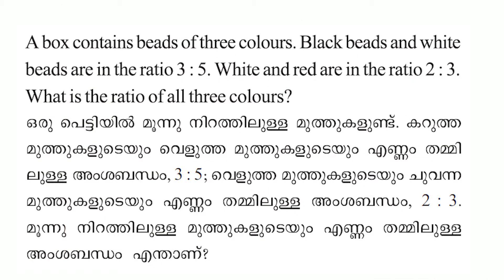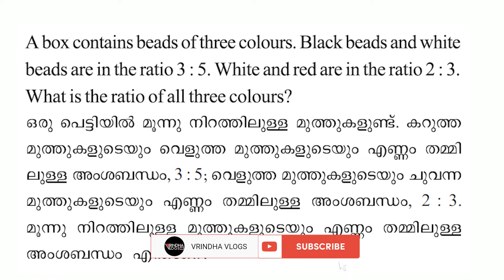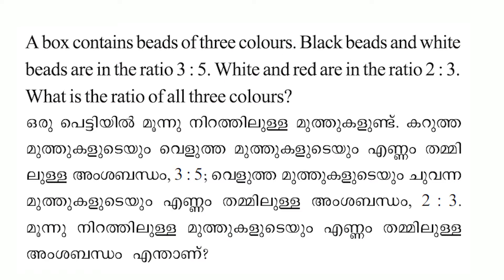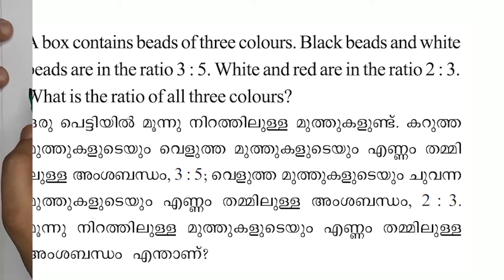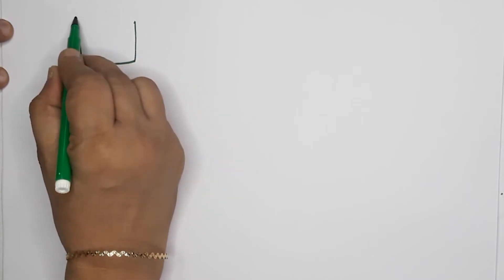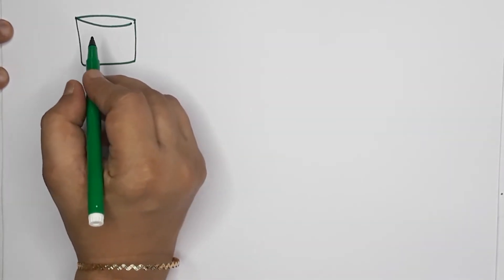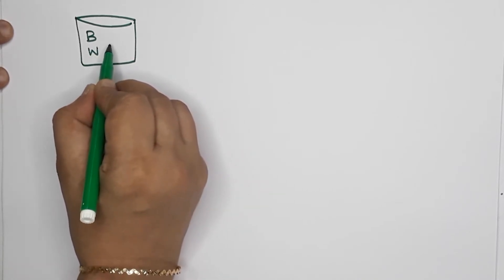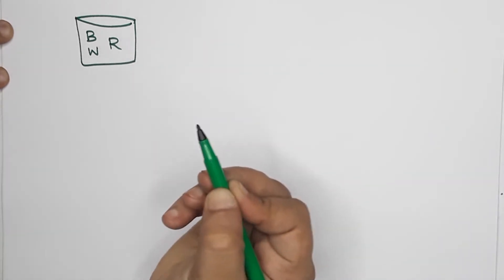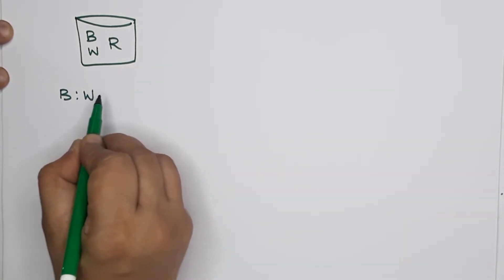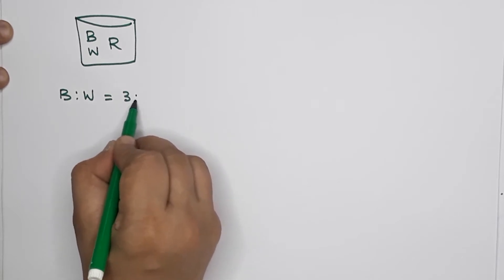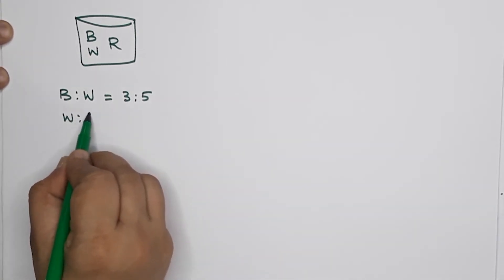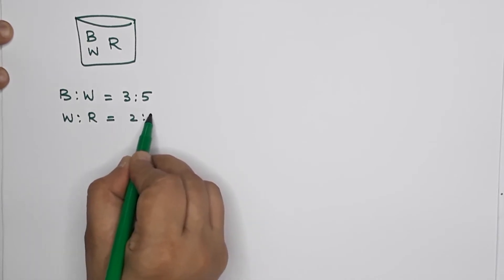Sixth question: A box contains beads of three colours — black, white, and red. Black beads and white beads are in the ratio 3 is to 5. White beads and red beads are in the ratio 2 is to 3. What is the ratio of all three colours?